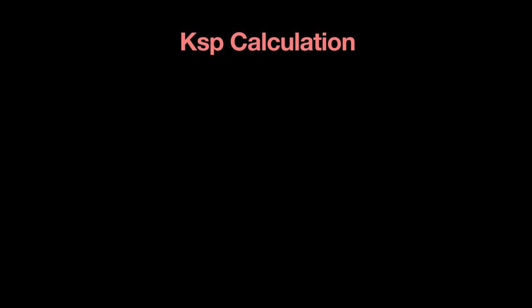Earlier we were looking at how you can write KSP expressions for saturated solutions. Today we're going to calculate the value for KSPs. As an example, let's say we have a saturated solution of magnesium fluoride. A saturated solution is in equilibrium with its aqueous ions and the solid — an equilibrium between solid magnesium fluoride and its aqueous ions, including Mg²⁺ and 2F⁻ aqueous.